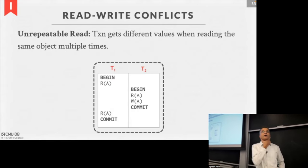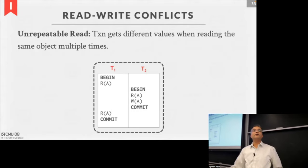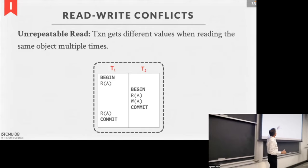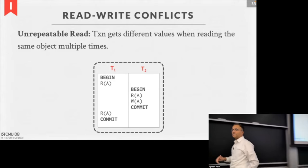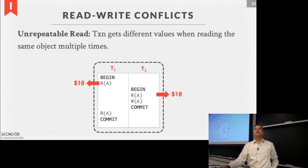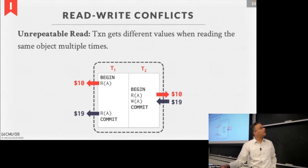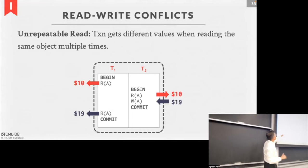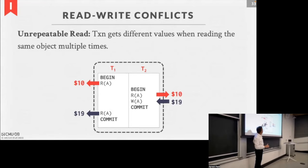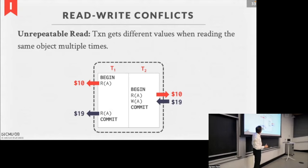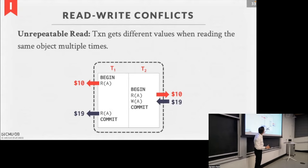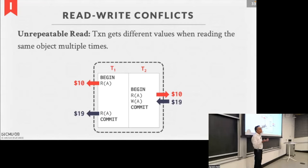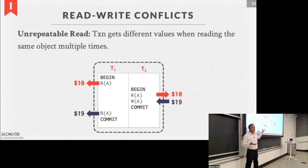We use these conflict properties to define how to make equivalent schedules work. There are two types of serializability: conflict serializability (which we'll focus on) and view serializability (which we'll briefly mention). Conflict serializability is what database systems implement. We'll take operations and enumerate all conflicts — read-write, write-write, write-read — and create a dependency graph.